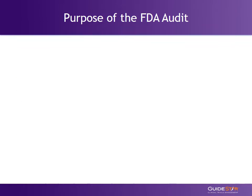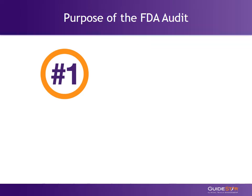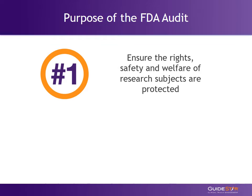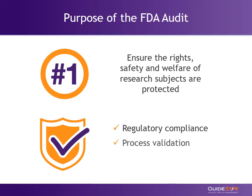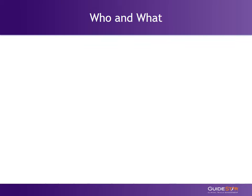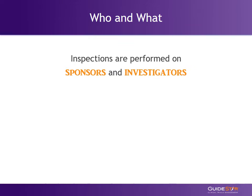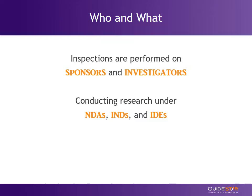Let's start by talking about why the FDA audits sites in the first place. First and foremost, the agency's responsibility is to ensure the rights, safety, and welfare of research subjects are protected. Though subject protection is priority number one, auditing also guarantees regulatory compliance, process validation, and accurate study data submission. The FDA Office of Regulatory Affairs performs inspections of sponsors and monitors activities and investigators at research sites. Research activities under new drug applications, investigational new drugs, and investigational devices are all subject to FDA auditing, and special care should be taken to follow the set guidelines.